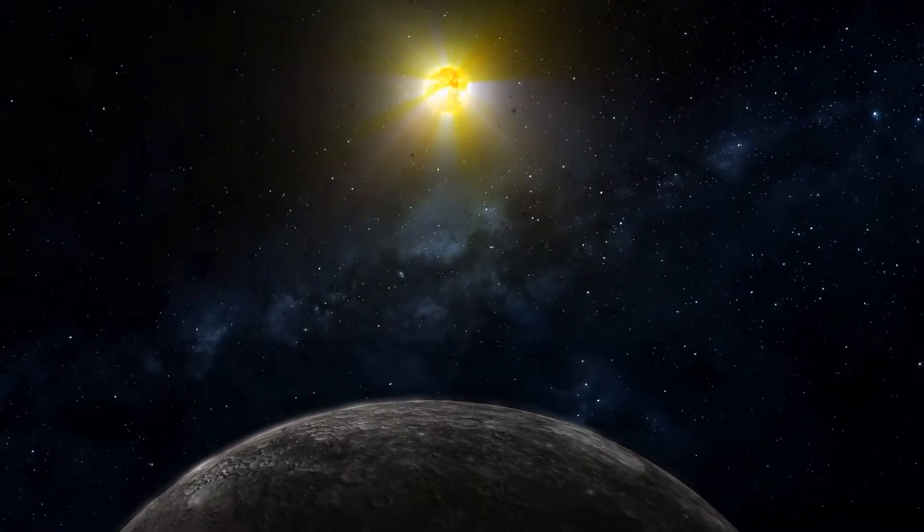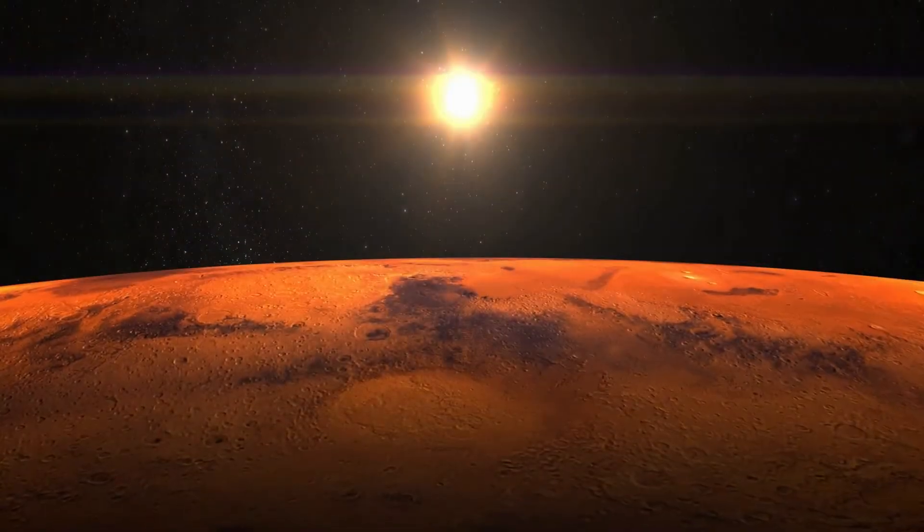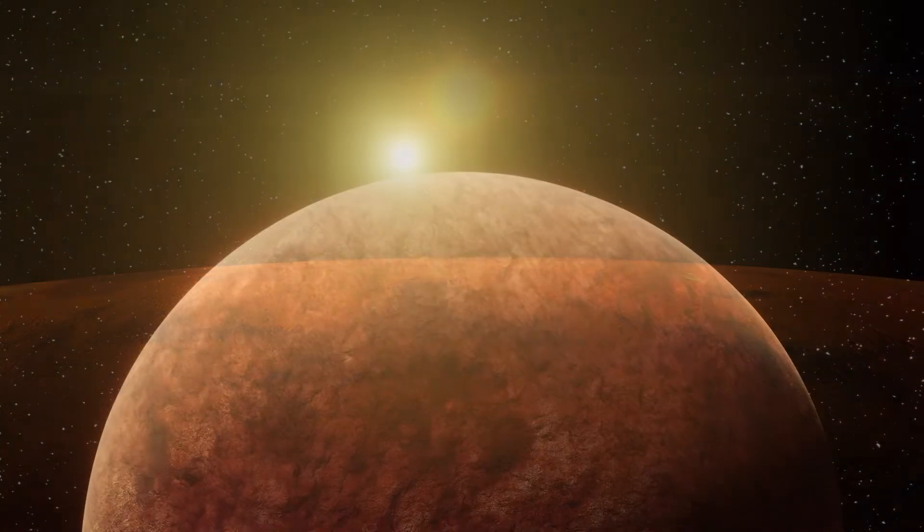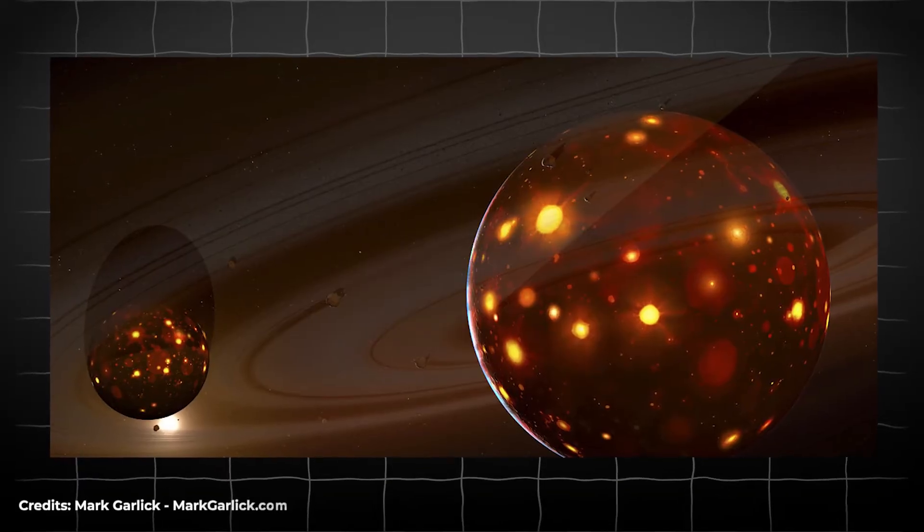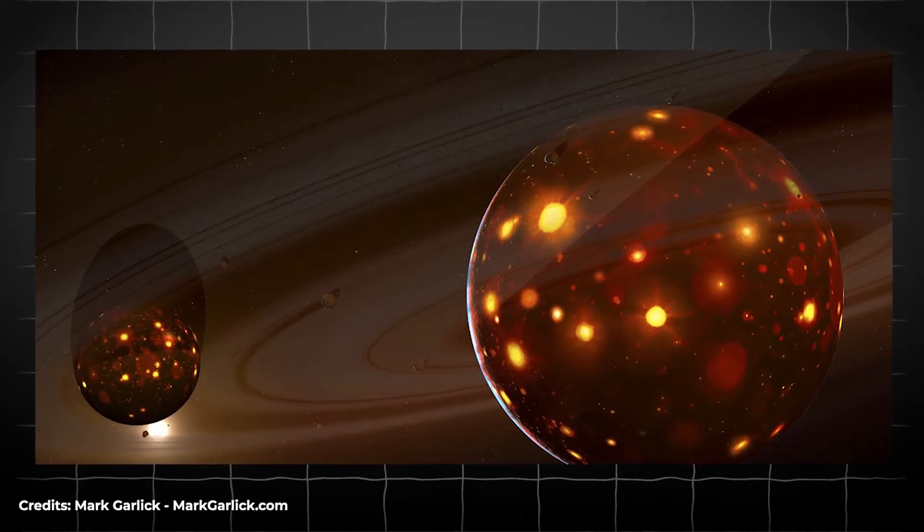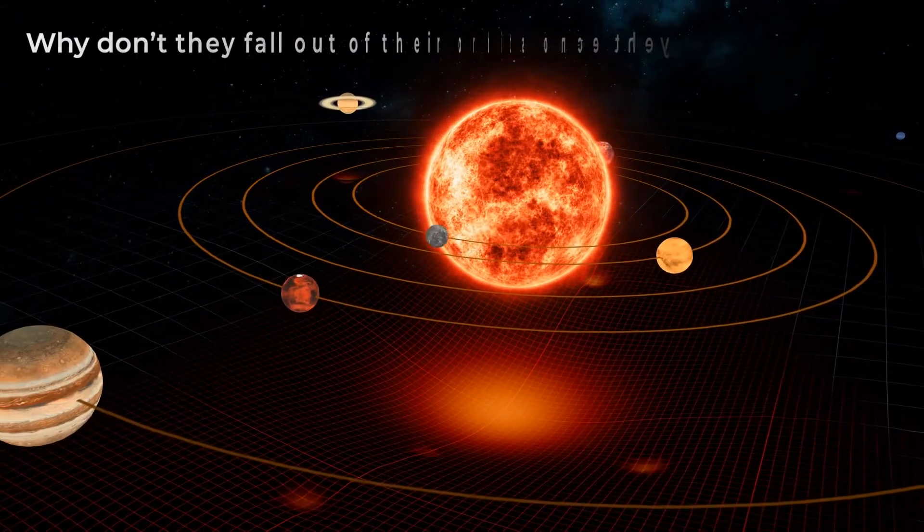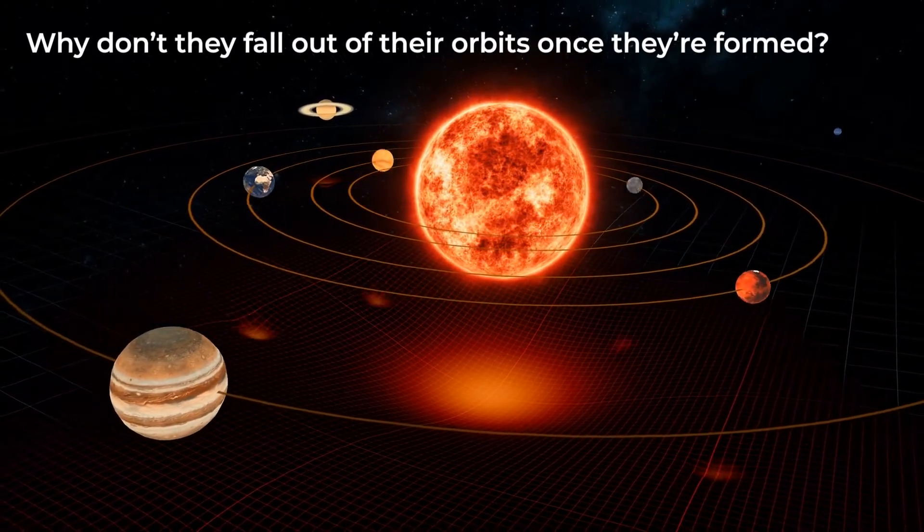That is why each planet has its orbit around the Sun. Because initially, when they formed, they absorbed all the matter in that area, so there cannot be two planets sharing the same orbit. When a planet fails to absorb all the matter from the protoplanetary disk, small moons form around it. Even though planets can't share their orbits, why don't they fall out of their orbits once they're formed?